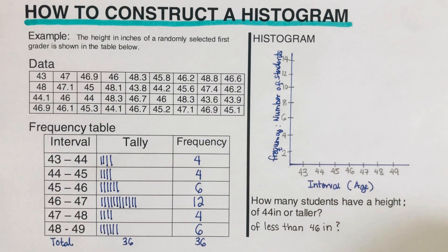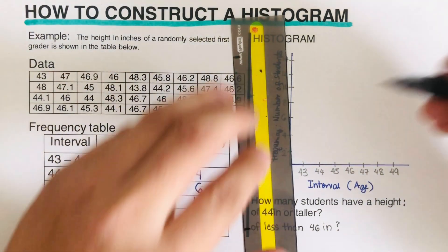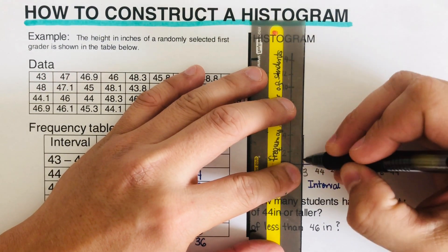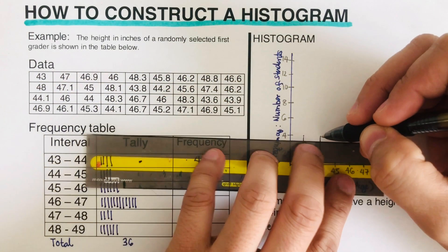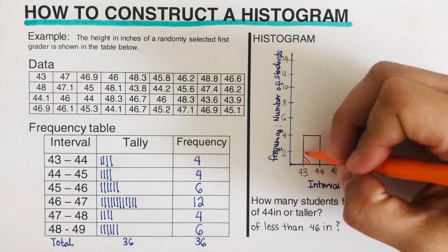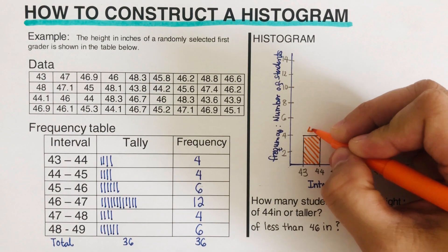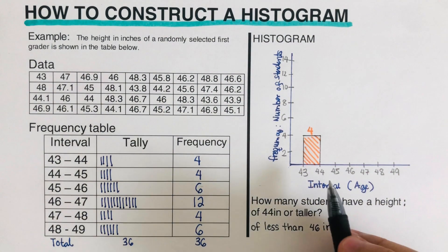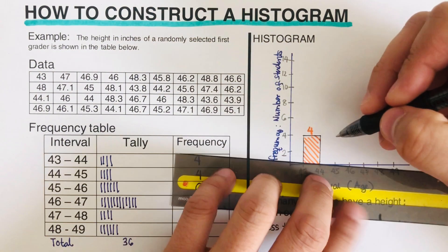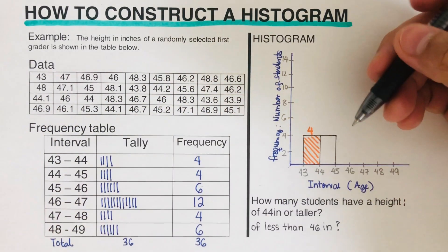Now we create the rectangles. For the interval 43 to 44, the frequency is 4, so I draw a rectangle from 43 to 44 reaching up to 4 and label it. For the next interval, 44 to 45, the frequency is also 4, so I draw another rectangle there and label it 4.